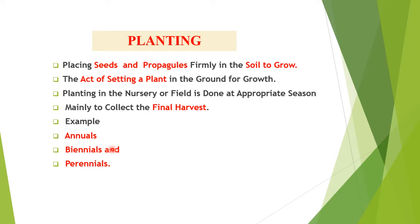Planting means placing seeds or propagules in the soil. Propagules include those parts by which a plant propagates — it can be a rhizome, a stem cutting, or any other means of propagation.